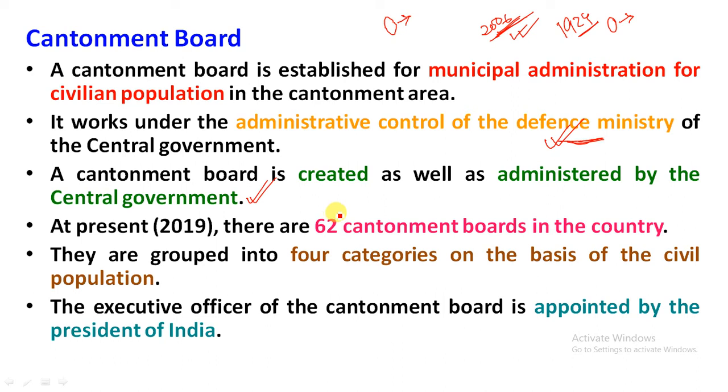As of 2019, there are a total of 62 Cantonment Boards in this country.